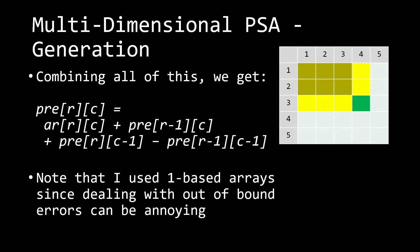One thing to note is that I've been using one-based arrays — counting starts at 1 instead of 0. This makes it easier to handle out-of-bound cases. When we compute r-1 or c-1 and reach index 0, that cell holds a value of zero, so there's no need for extra bounds-checking.